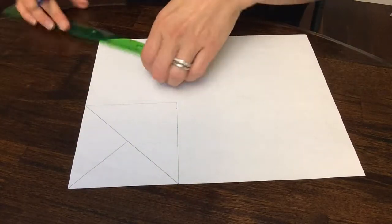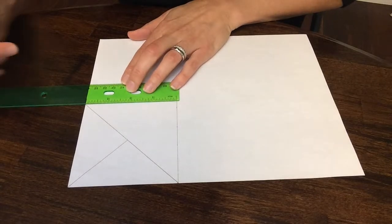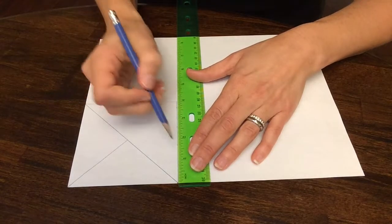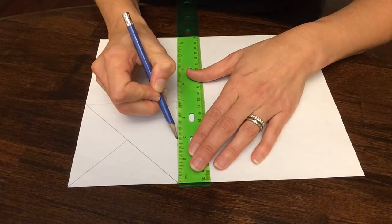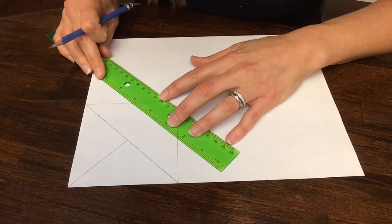To get the triangle that goes in this bottom corner over here, we're going to measure to the midpoint of both sides, which, because we're doing 4 inches by 4 inches, will be at 2 inches. And connect those two points together.